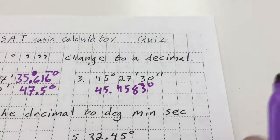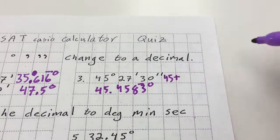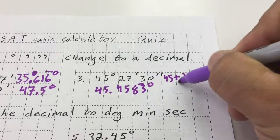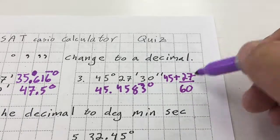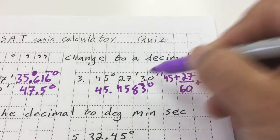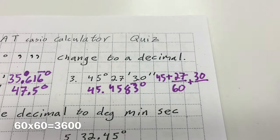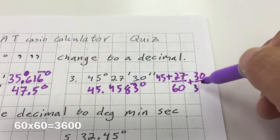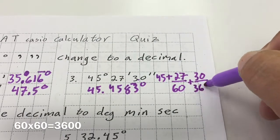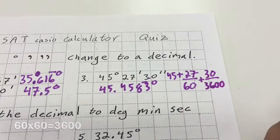If they ask you to do this without a calculator, the setup would be 45 plus 27 over 60 — there are 60 minutes in an hour — plus 30 over 3,600 seconds, since there are 60 seconds times 60 minutes, which is 3,600 seconds.